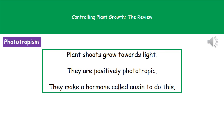Phototropism is where plant shoots grow towards the light. Because they're growing towards the light, they're referred to as being positively phototropic. In order to do this they need a hormone called auxin, which allows them to grow their shoots towards the light.